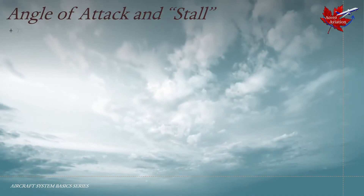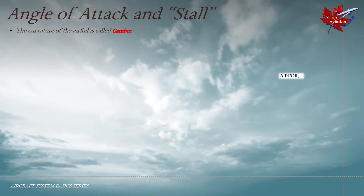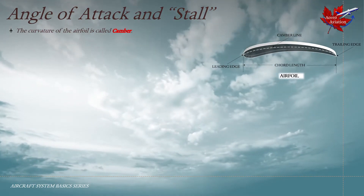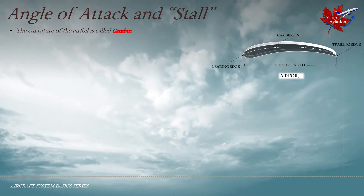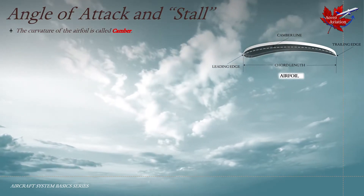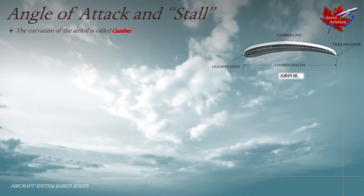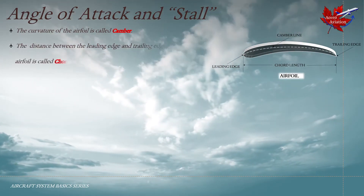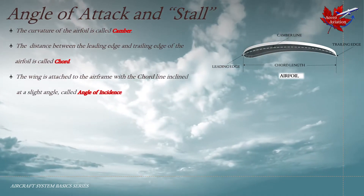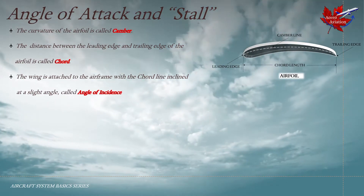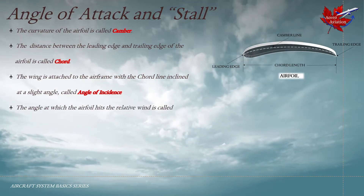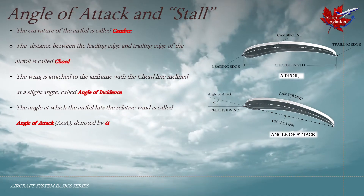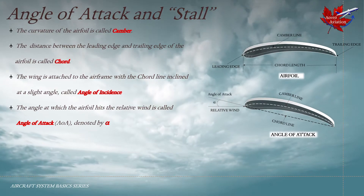Angle of attack and stall. The curvature of the airfoil is called camber. The leading edge is the part of the airfoil that meets the airflow first. The trailing edge is the portion of the airfoil where the airflow over the upper surface rejoins the lower surface airflow. The camber line is a line drawn between the leading edge and the trailing edge. A straight line that measures the distance between the leading edge and the trailing edge is called the chord of the wing. The wing is attached to the airframe with the chord line inclined at a slight angle, which is called angle of incidence. The angle at which the airfoil hits the relative wind is called angle of attack, denoted by alpha, and can be seen as the angle between the extended chord line and the relative wind.